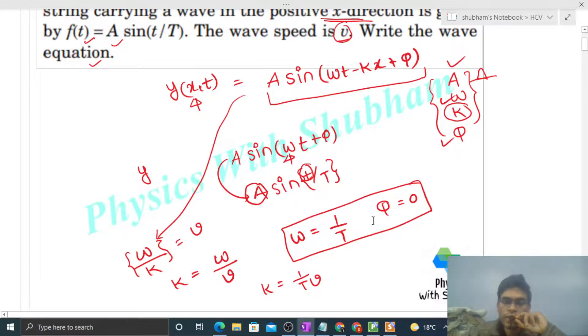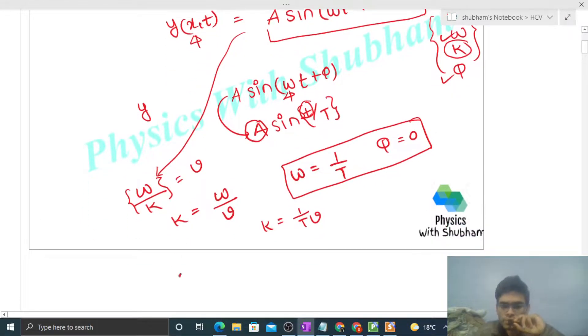Now we know everything, just put the values. A sin ωt, so in place of ω we get 1 upon T, ωt minus k, in place of k we get 1 upon Tv, kx plus φ, in place of φ we get 0.